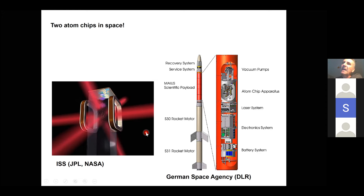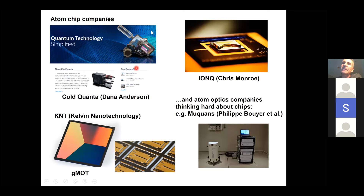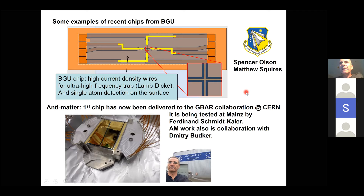There are already many companies around. ColdQuanta has a beautiful vacuum chamber almost the size of your palm — a two-chamber device with a 2D-MOT plus a chip chamber. IonQ is making ion chips for quantum computing, and other companies not previously doing chips are now entering the business. We made a chip for the US Air Force — a very interesting quantum technology chip. And this chip going to CERN is being tested in Ferdinand Schmitt-Kaler's lab in Mainz for the antimatter factory of anti-hydrogen atoms.